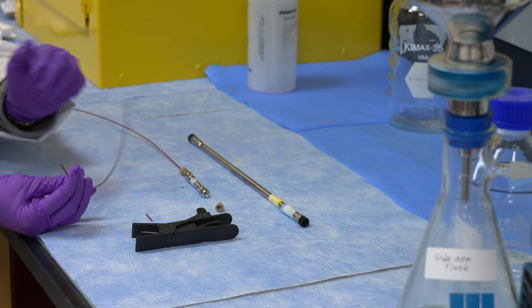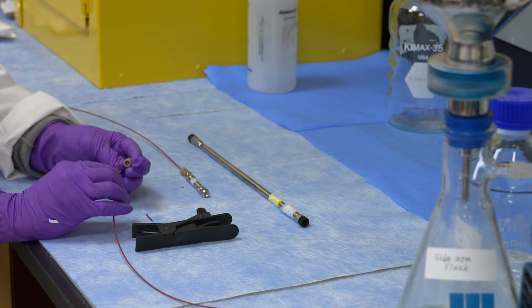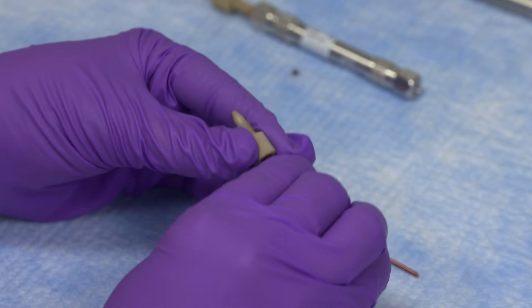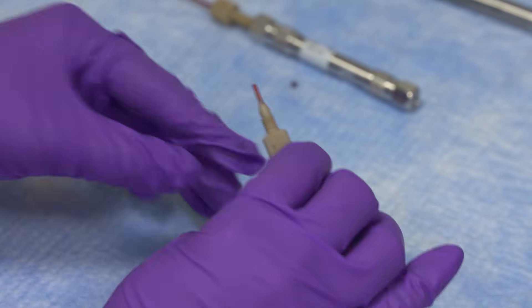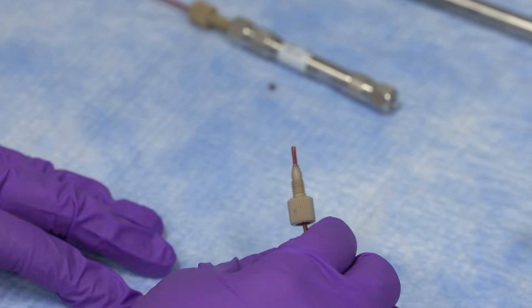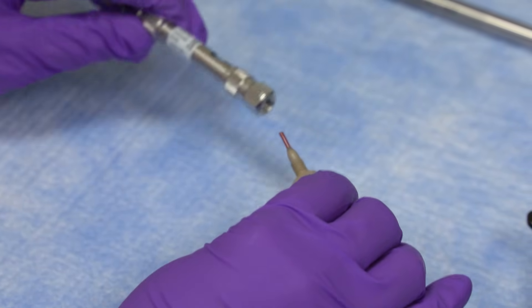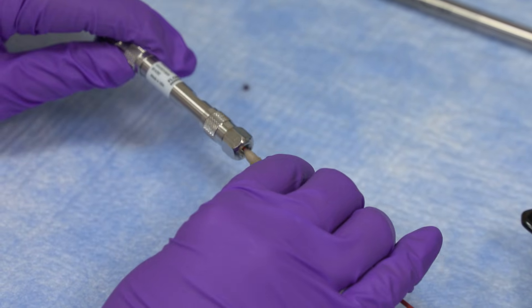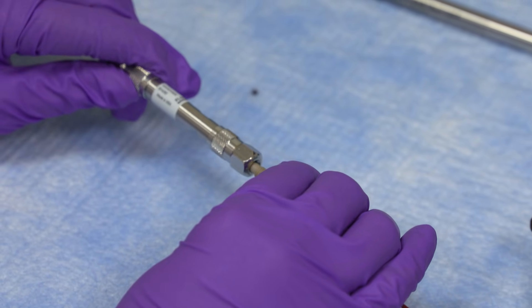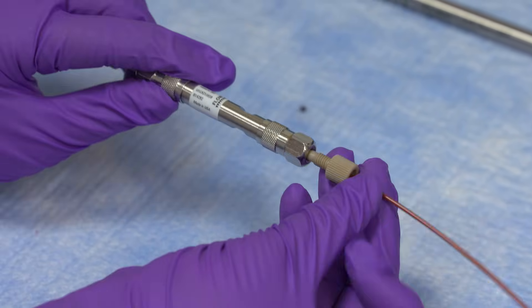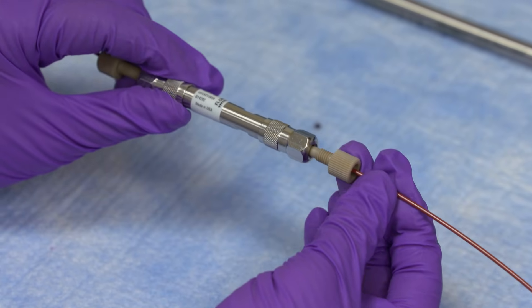You take this end of the peak tubing, insert it in the ferrule, just about an inch from this side. Take the ferrule and you attach it to the column. To know which side you will attach this ferrule to is by knowing the flow of the solution in the column.